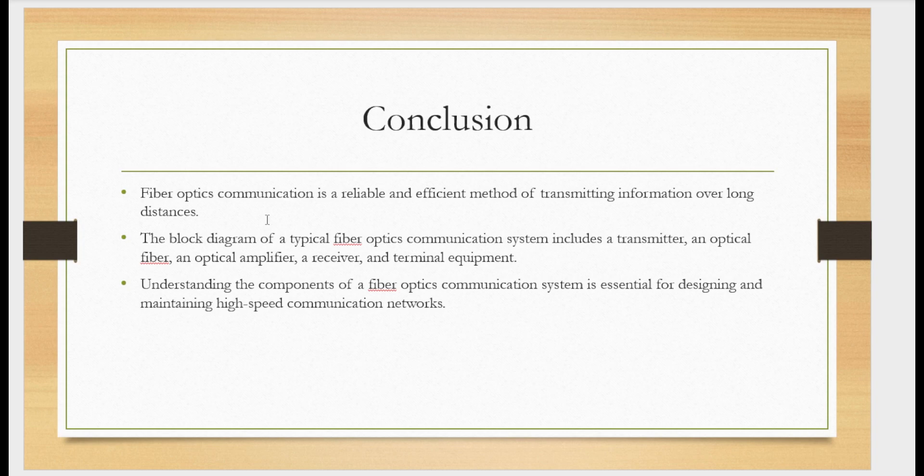I would like to conclude this video session. Fiber optics communication is a reliable and efficient method for transmitting information over long distances. In this video, we studied the block diagram of a typical fiber optics communication system including transmitter, optical fiber, optical amplifier, receiver and terminal equipment. Understanding the concepts of fiber optic communication system is essential for designing and maintaining high speed communication networks. Thanks for listening to this video lecture till end. Thank you, see you next time.